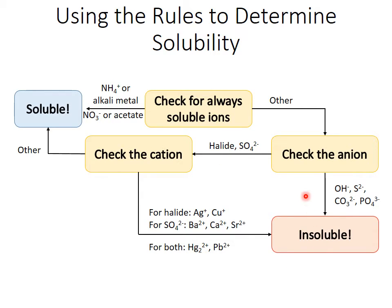On the other hand, if you have a halide or a sulfate anion, then you have to check the cation. These have a number of exceptions — they're usually soluble unless for a halide, silver(I) or copper(I) is the cation, or for sulfate, barium, calcium, or strontium are the cation.